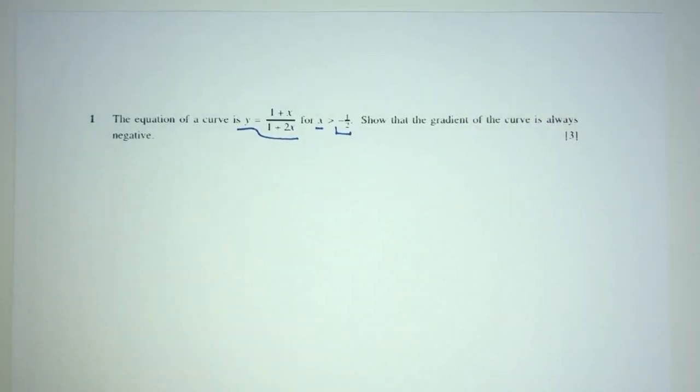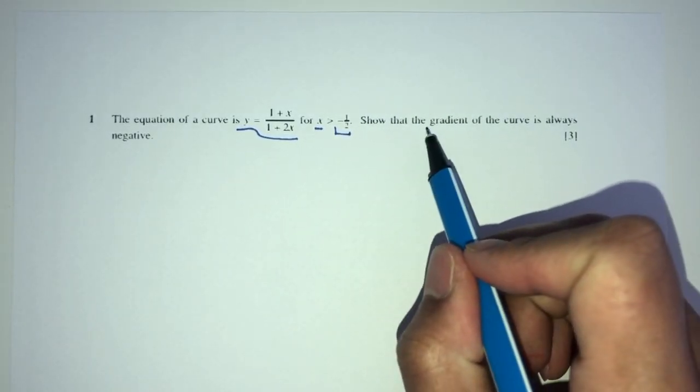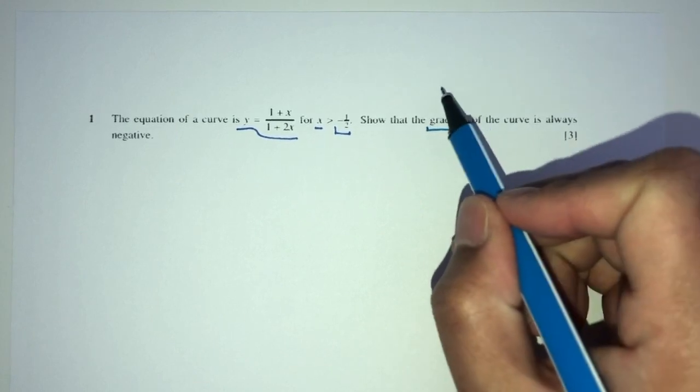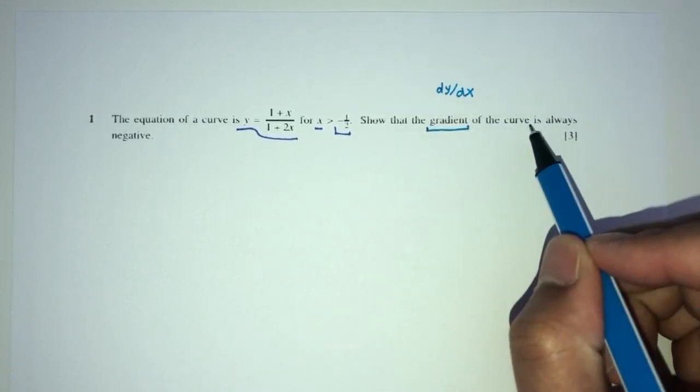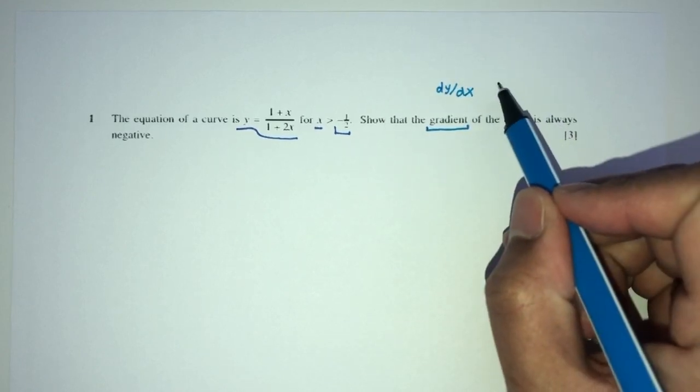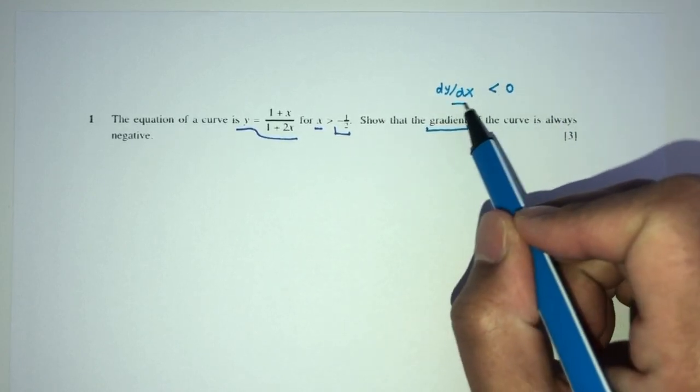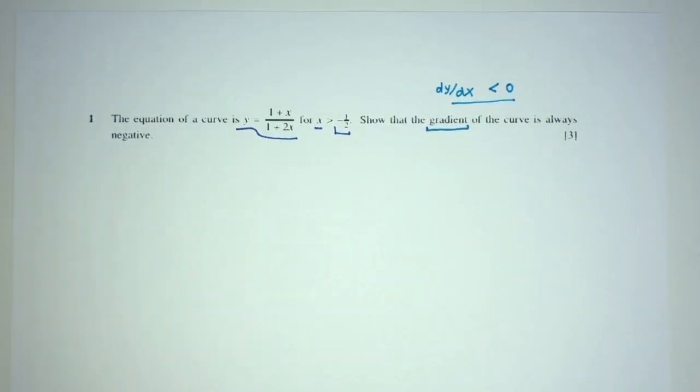That's one of the reasons why they define it as not equal to negative half. Now, we have to show the gradient. We have to know the gradient of a curve simply means it is dy by dx. It's always going to be negative, which is less than 0. We have to show this is true. Well, let's first find dy by dx.